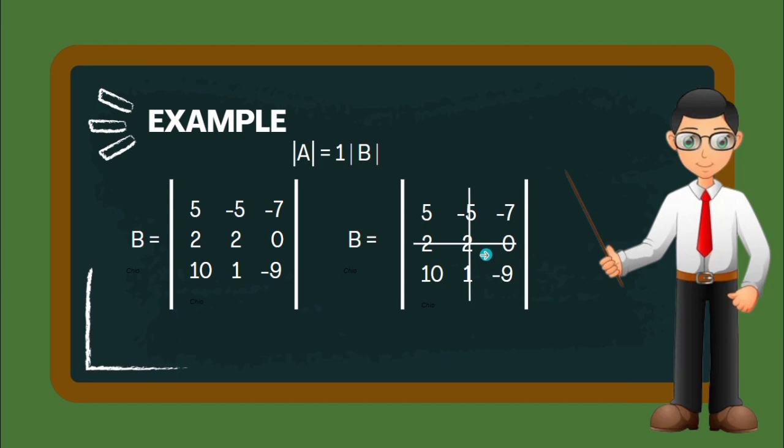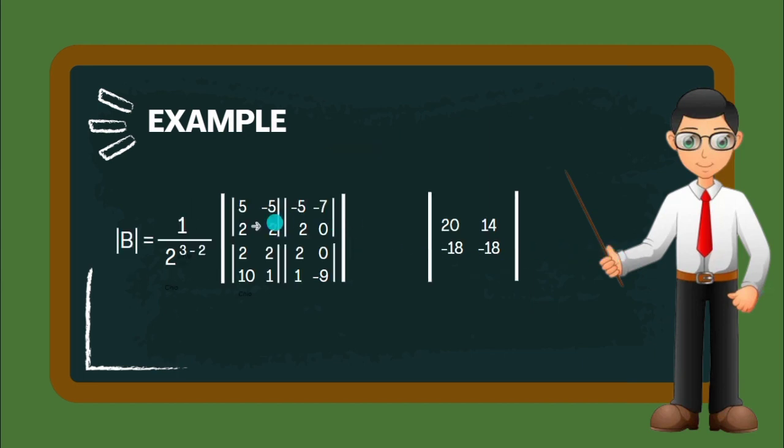Then after that, we will again find the determinant using the cross-multiplication method. 5 times 2 equals 10, and then 2 times -5 equals -10. 10 minus -10 equals 20. After applying the cross-multiplication method, we get 20, 14, -18, and -18.